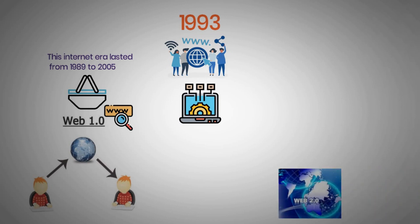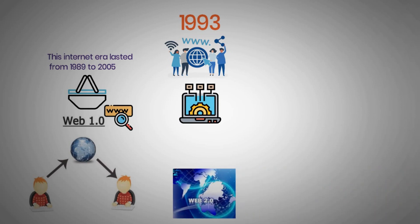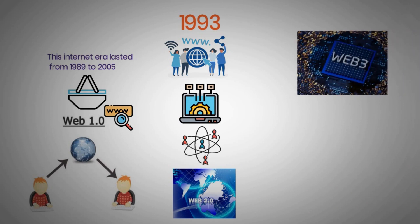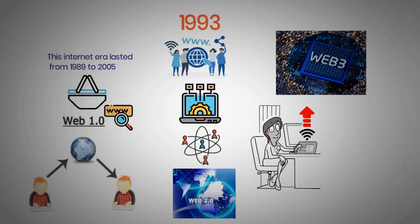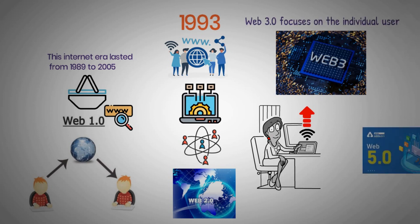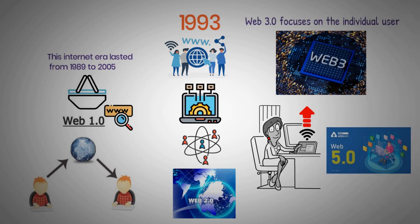Web 2.0 followed, which enabled more interactive features and user-generated content. Web 3.0 was soon on the scene. Despite being relatively new, this stage of the internet is built on semantic markup and web services. Web 3.0 focuses on the individual user. We've been told that Web 5.0 is rapidly approaching, and we're still only just getting used to Web 3.0.